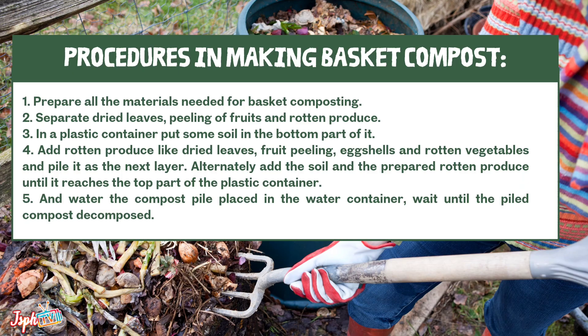For the procedures in making basket compost: prepare all the materials needed. Separate dried leaves, fruit peelings, and rotten fruit and vegetable scraps. In a plastic container, put some soil in the bottom. Add rotten fruit scraps, dried leaves, fruit peelings, and eggshells and pile them as the next layer.